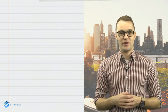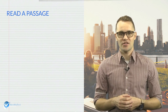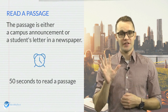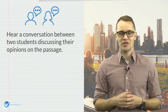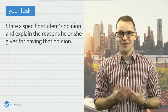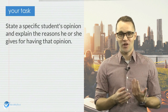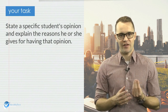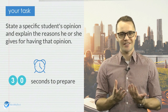TOEFL Integrated Speaking Task 3 will ask you to read a passage related to a campus situation. The passage is either a campus announcement or a student's letter in a newspaper. You will be given 50 seconds to read the passage. Next, you will hear a conversation between two students discussing their opinions on the passage you have just read. Finally, you will answer a question based on the passage and the conversation. The question will ask you to state one specific student's opinion and explain the reasons he or she gives for having that opinion. You will have 30 seconds to prepare a response and 60 seconds to speak.